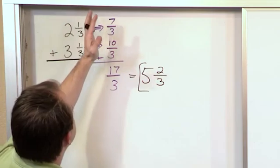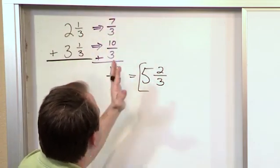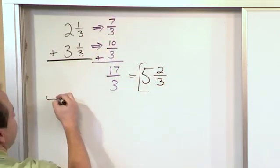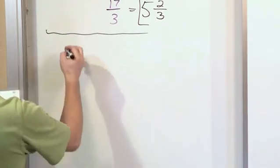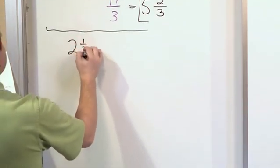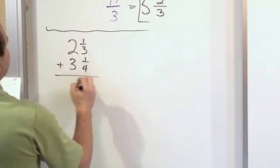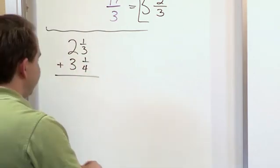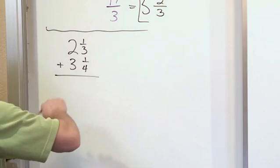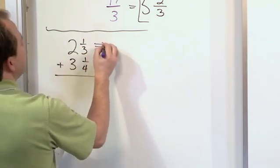So again, we convert to improper, add, and then convert back to mixed numbers. What if we have 2⅓ plus 3¼? So, in order to do this, we just convert each one of these into improper fractions.